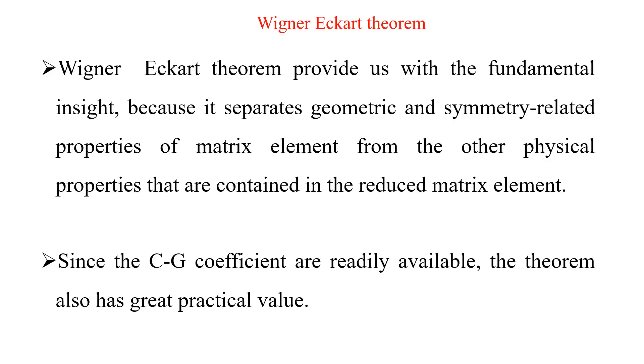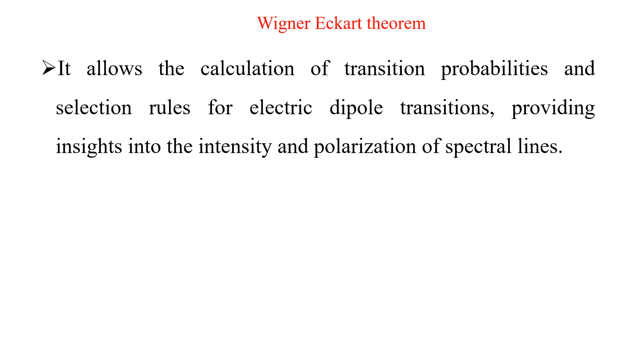Basically, we are going to find the property by including other quantum number also, like the principal quantum number. The main application of the Wigner-Eckart theorem is, it is used to find the allowed transition by the way of finding the selection rules for electric dipole transition, providing the insight into the intensity and polarization of the spectral line.